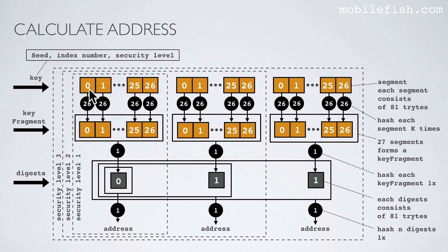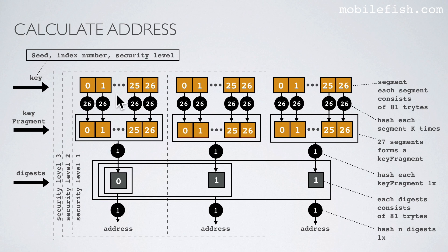The generated key is divided into segments of 81 trits each. Each segment consists of 81 trits. If you have selected security level 1, you will have 27 segments. If you have selected security level 2, you will have 54 segments. And if you have selected security level 3, you will have 81 segments.